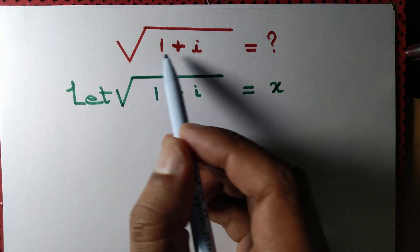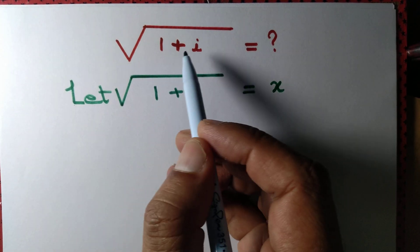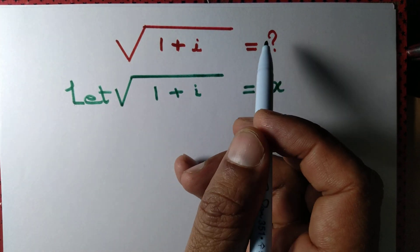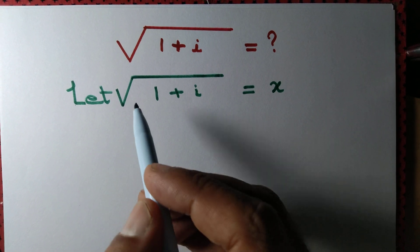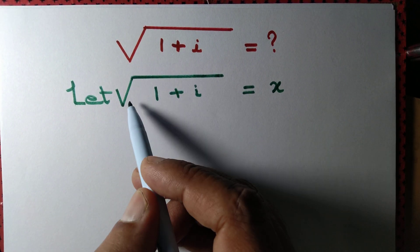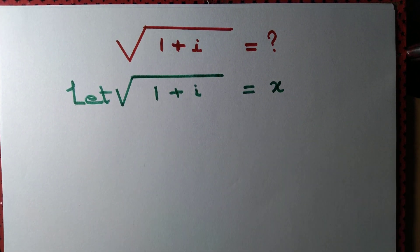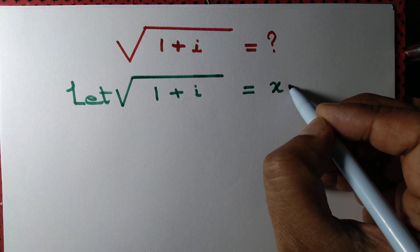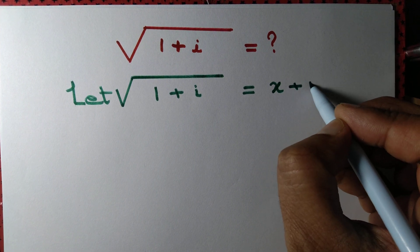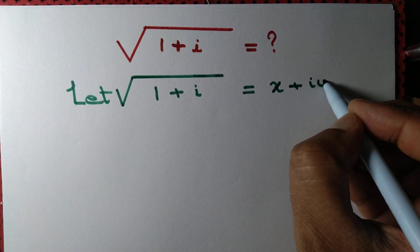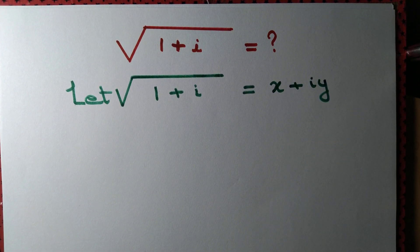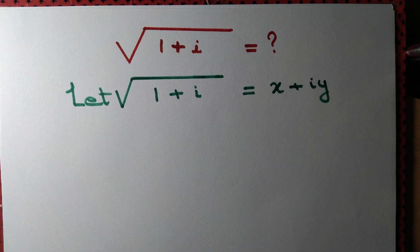Let us find the square root of the complex number 1+i. Since we do not know exactly the value of √(1+i), let us assume that √(1+i) = x+iy, where x and y are real numbers and i = √(-1).